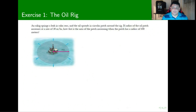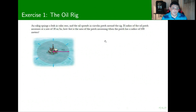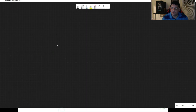Now let's look at another example. An oil rig springs a leak at sea, and the oil is spreading in a circular patch around the wreck. The radius of the oil patch is increasing at about 30 meters per hour. How fast is the area of the patch increasing when the radius is 100 meters?